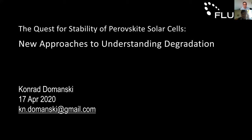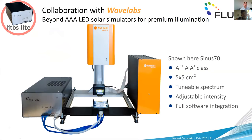Q&A: Is the technique capable of measuring tandem devices or only single junctions? Yes, of course. For tandems, one of the big considerations is having the right light spectrum — a big challenge for stability testing in general. If you use just white or white plus UV light, you won't get the right spectrum for testing tandems unless your tandem is optimized for that specific source. With LITOS Light, we offer a solution where we measure under triple-A solar simulator — an affordable solution for stability studies of tandems.